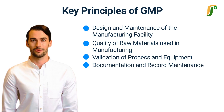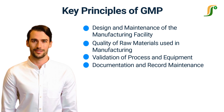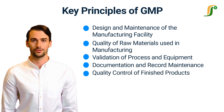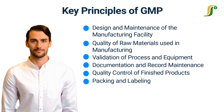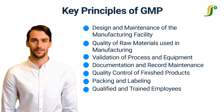Number four is documentation and record maintenance. Accurate records of all manufacturing and testing activities should be maintained, including raw material and equipment processing. Fifth is quality control of finished products. Finished products must meet the required quality and standards, and must be tested by a quality control laboratory before releasing for distribution. Sixth principle is packing and labeling. Packing and labeling of the products must be accurate and must have all necessary information printed on it. Seventh is qualified and trained employees. The employees working in manufacturing and analysis of raw materials and final products must be qualified and trained for the work they do.